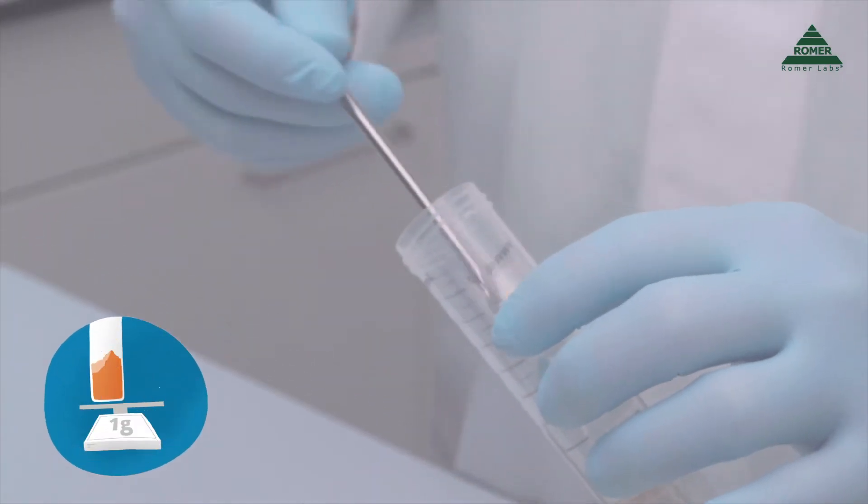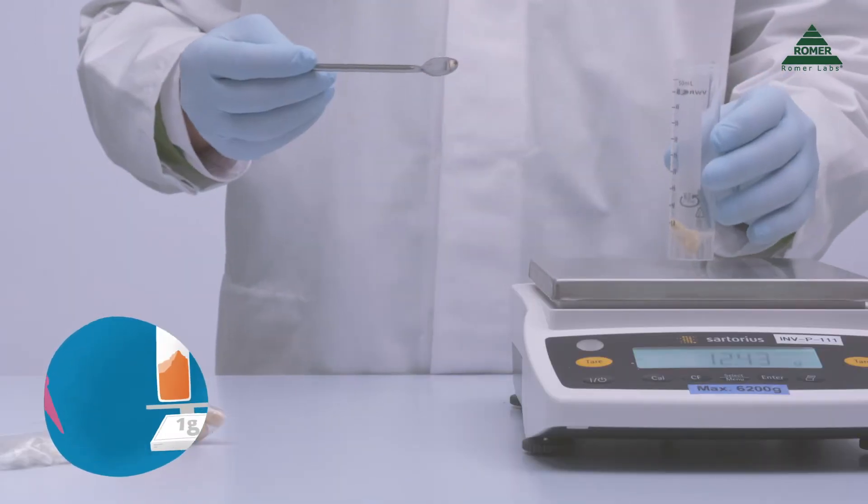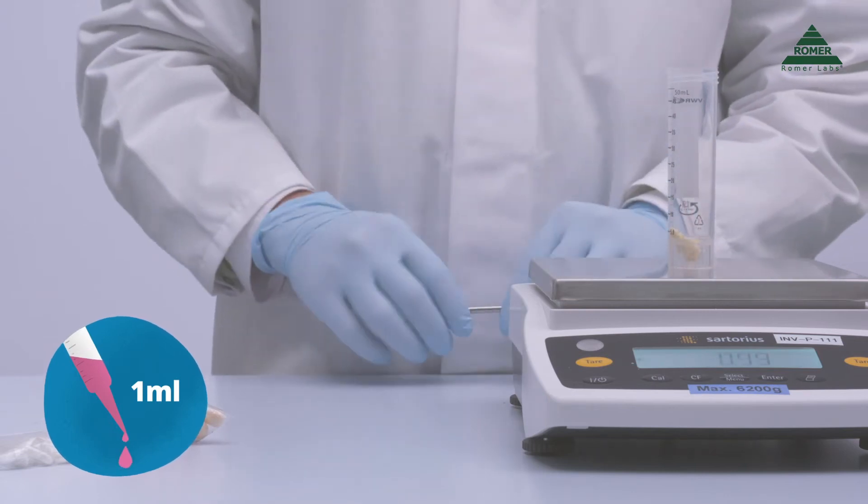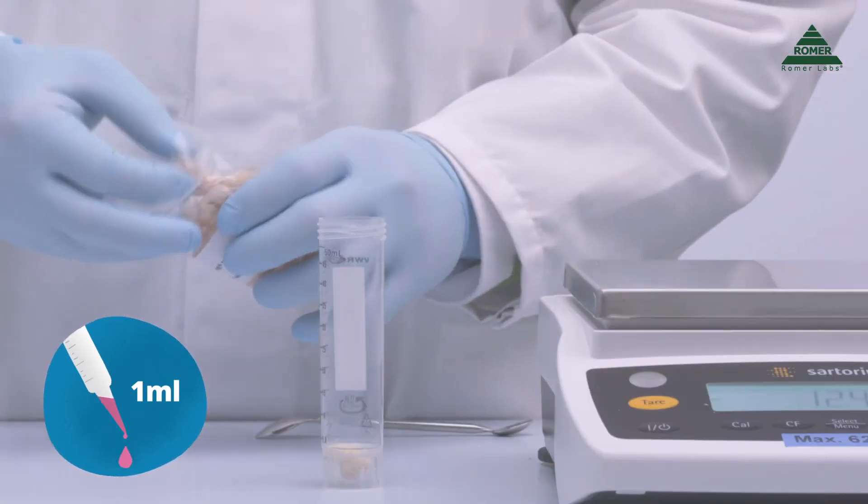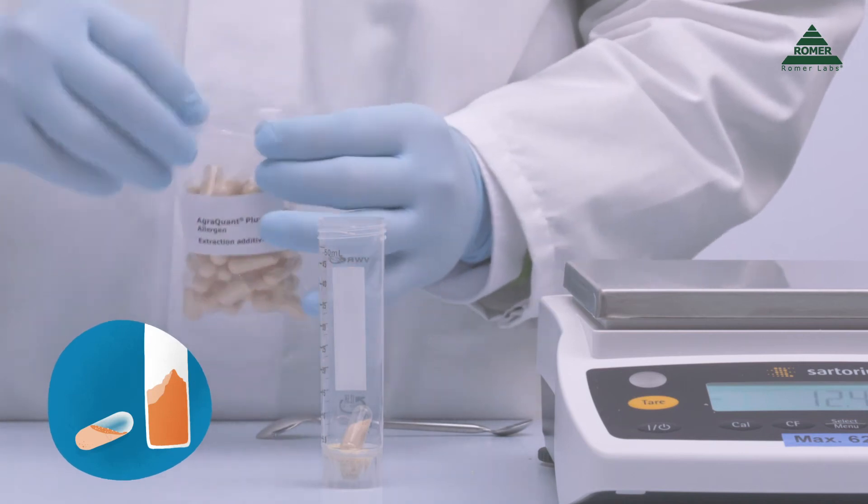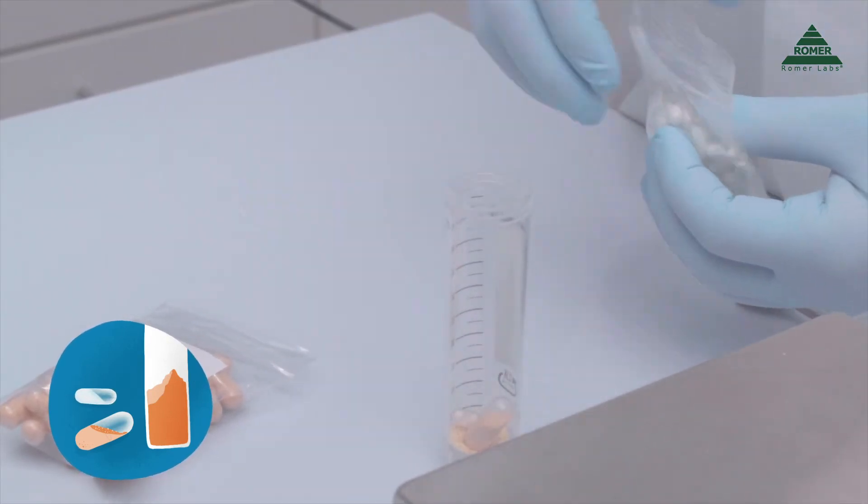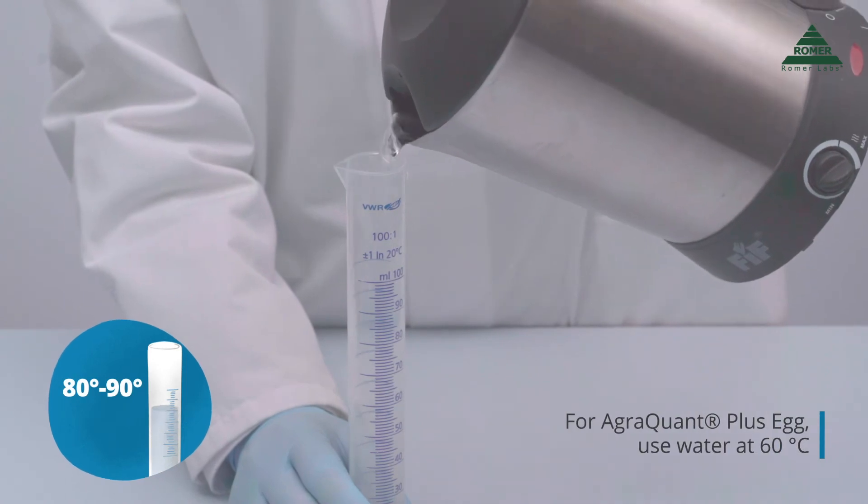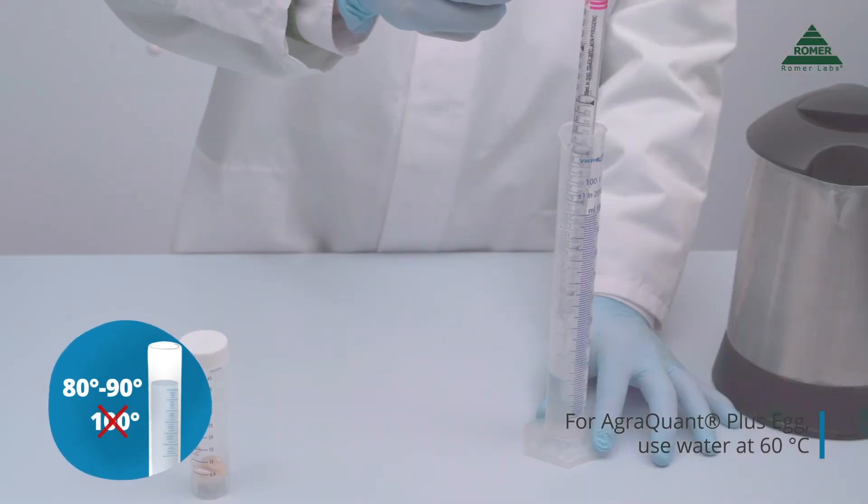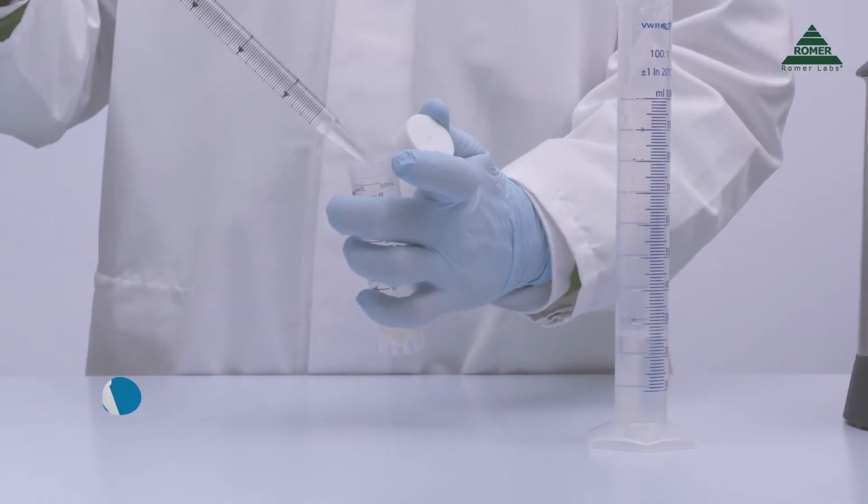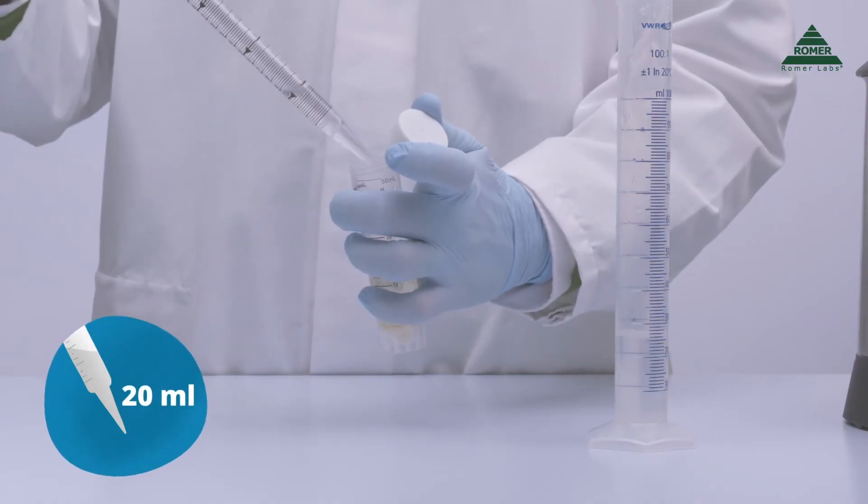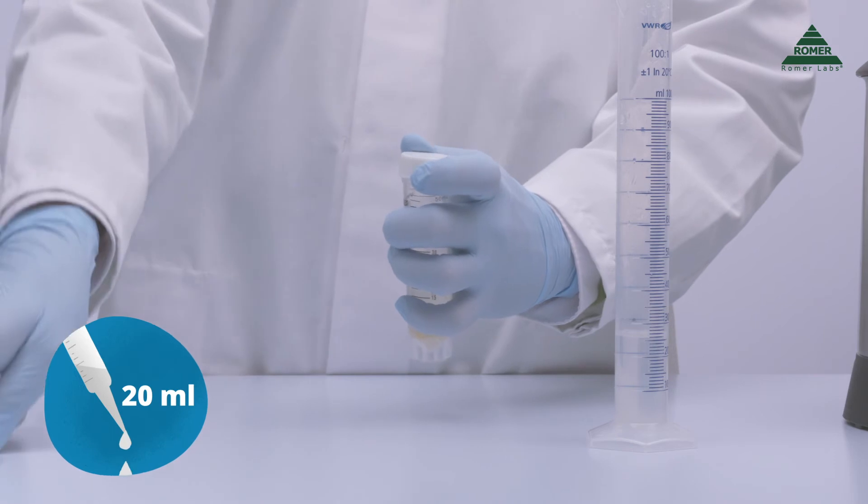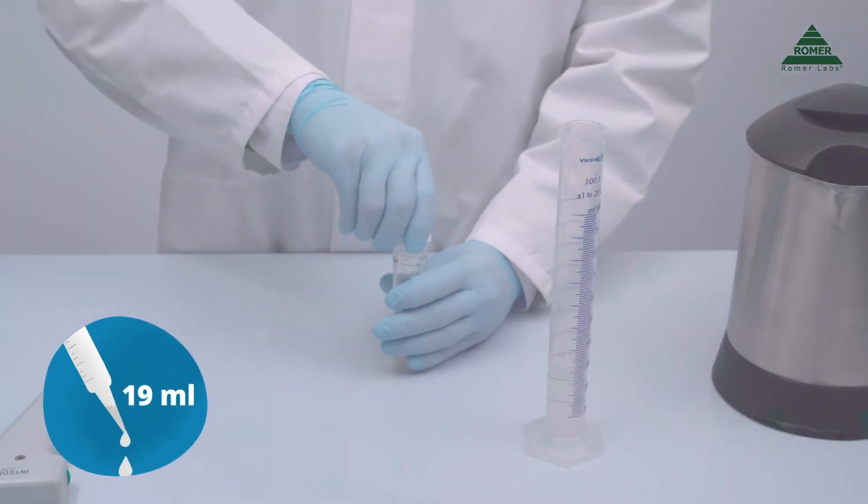Weigh 1 gram of homogenized solid sample or 1 milliliter of homogenized liquid sample in a 50 milliliter tube and add 1 capsule of extraction additive 1 and 1 of extraction additive 2. Heat water to 80 to 90 degrees Celsius in a water boiler. Do not let the water boil. Add 20 milliliters of hot water to the tube. For liquid samples, add only 19 milliliters.